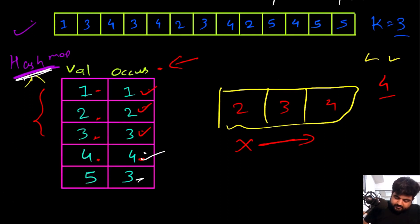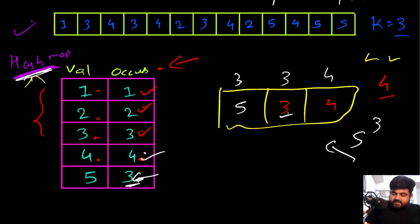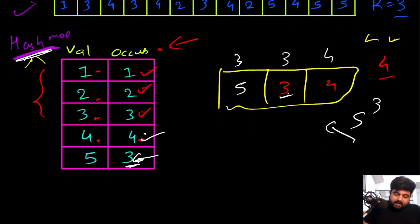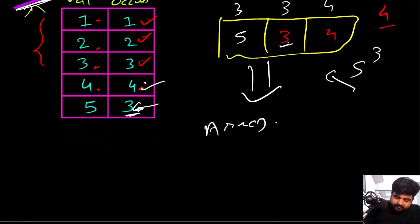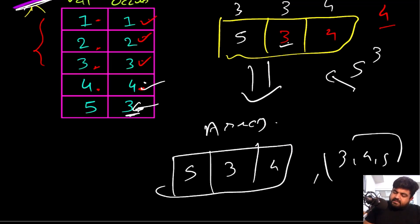We still have value 5 to add, which occurs three times. Currently we have 2 occurring twice, 3 occurring three times, and 4 occurring four times. Since 5 occurs more than 2, we can replace 2 with 5, placing it alongside 3 since they both occur three times. After that, all we need to do is convert the priority queue result into an array. We can return the result as 5, 3, 4, or 3, 4, 5, or in any order — and this is the solution.